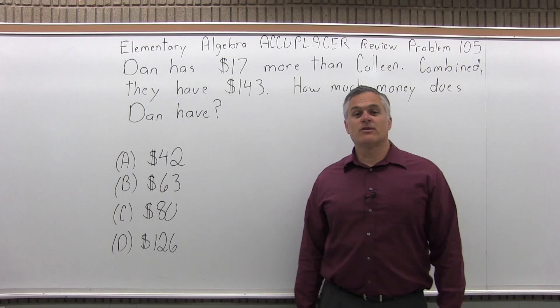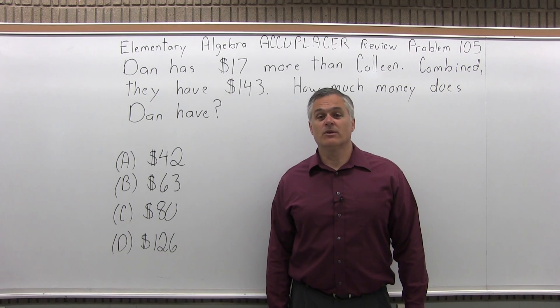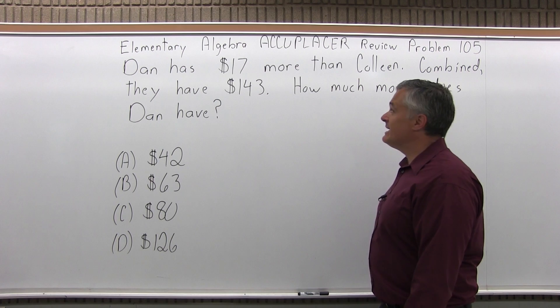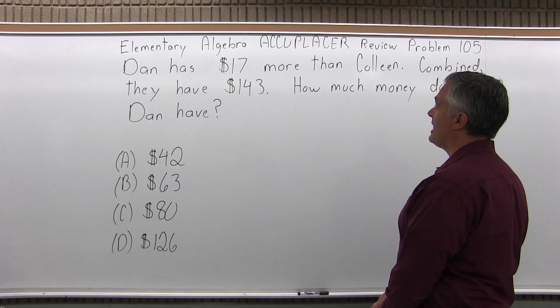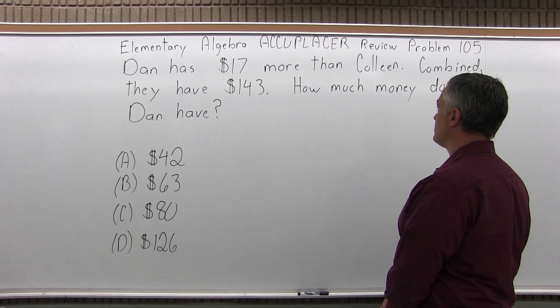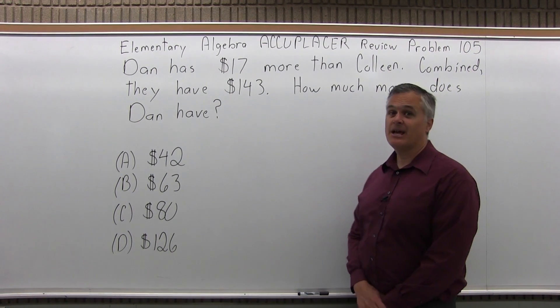This is the Elementary Algebra Accuplacer Review, Problem 105. It says Dan has $17 more than Colleen. Combined, they have $143. How much money does Dan have?